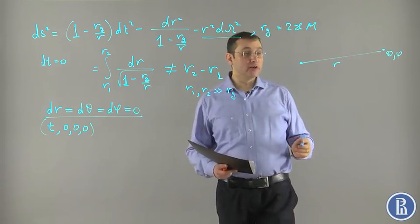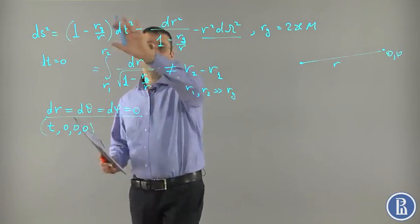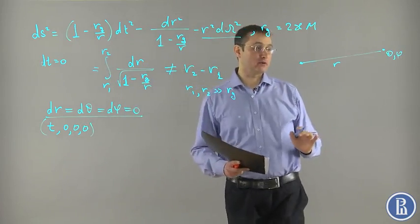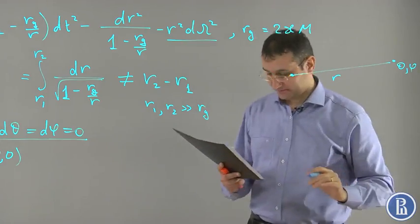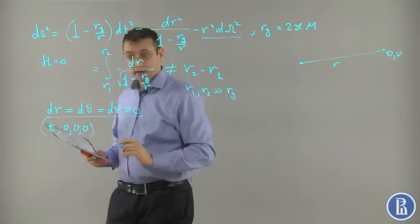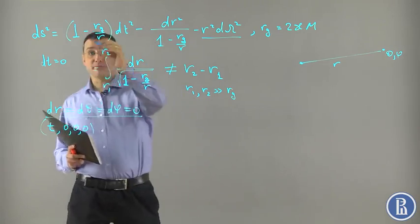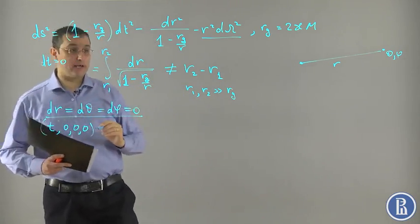So these are non-inertial. We say that this Schwarzschild metric is seen by non-inertial observers, which are fixed above this gravitating center. This is important. Let us describe properties of this metric in greater detail.